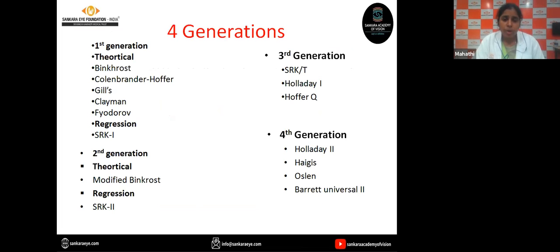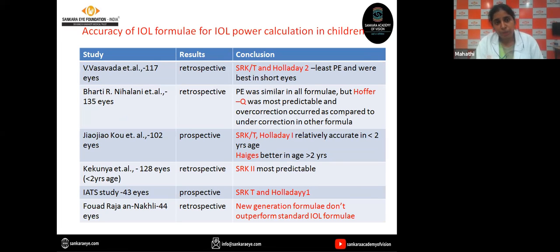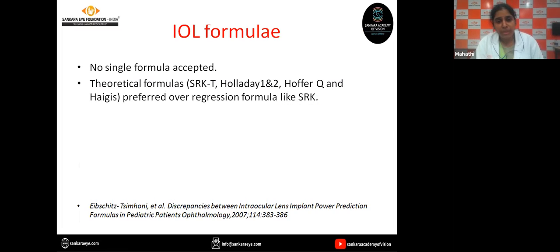Coming to IOL power calculation, there are a number of IOL formulas of four generations, both theoretical and regression. In adults, in very short eyes of less than 20 mm, Hoffer Q or Holladay 2 is the most accurate formula. In short eyes of about 20 to 22 mm, Haigis formula is used. But do these principles apply in children? A number of studies have been done to check for the accuracy of these formulas for IOL power calculation in children, and most were done on around 100 eyes and were retrospective. Some said SRK/T was good, some said Holladay 2 was good, and some said Haigis was good. Even the new generation formulas don't outperform the standard older formulas. No single formula is accepted, but theoretical formulas are preferred over regression formulas. New generation formulas like Barrett and Castrop perform similarly to older generations.